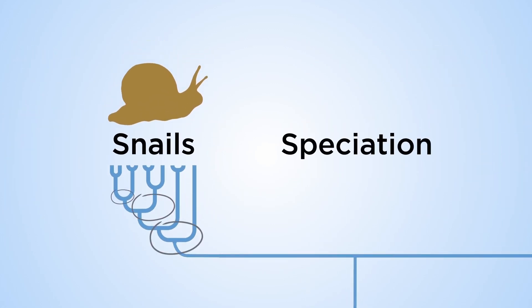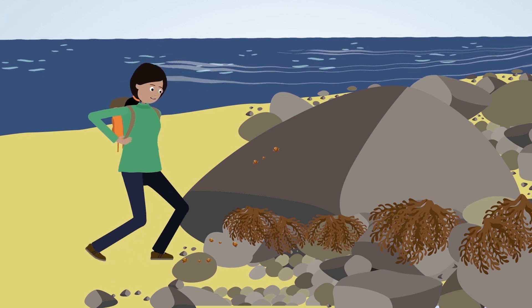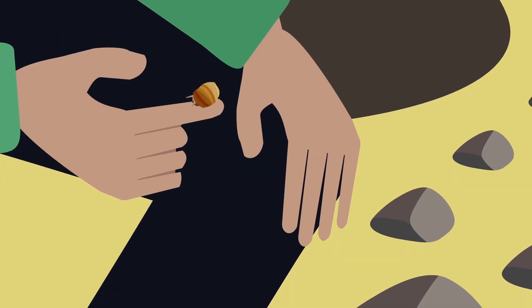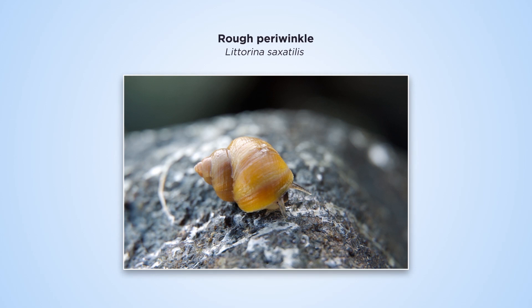How does speciation happen? Although not yet fully understood, rough periwinkles, Littorina saxatilis, show us how speciation might happen.